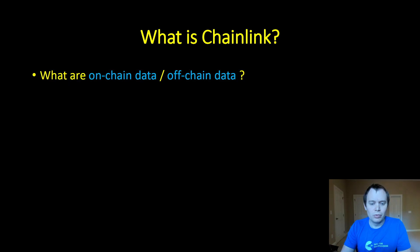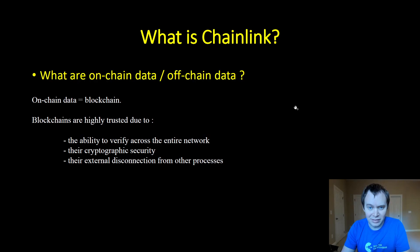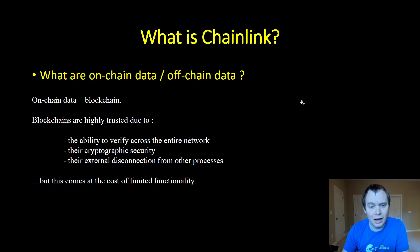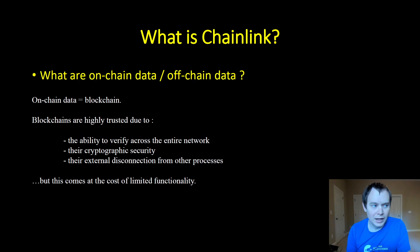On-chain means it's actually on the blockchain. Blockchains are highly trusted because you have the ability to verify across the entire network. They're cryptographically secure and have external disconnection from other processes — they're self-contained. But that does come at a cost. With everything in life and engineering, there's always a trade-off.